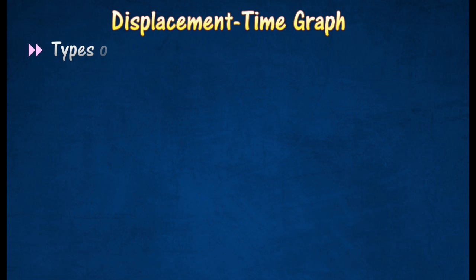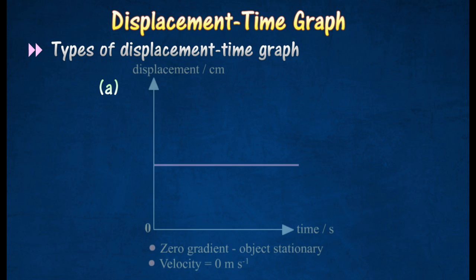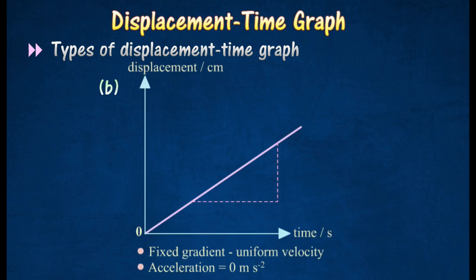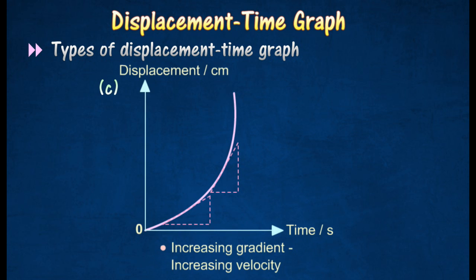Here are several types of displacement-time graph. Graph A shows that the object is in a stationary state, meaning it's not in motion. Graph B shows that the object is moving at uniform or constant velocity. Graph C shows that the object undergoes acceleration — since the velocity is increasing, the acceleration is positive.